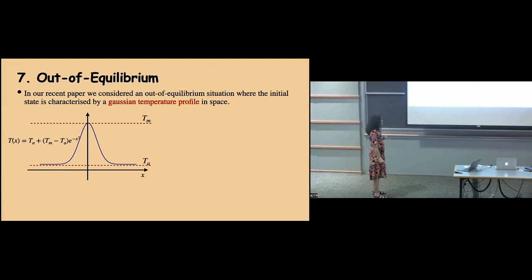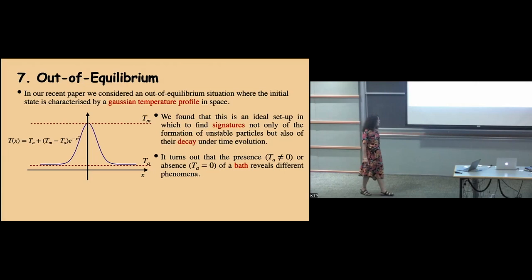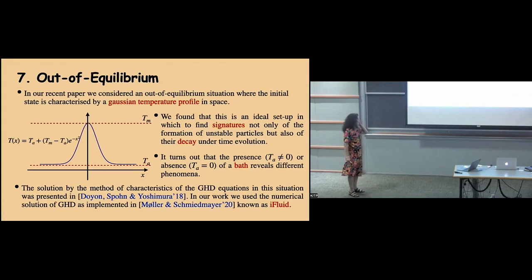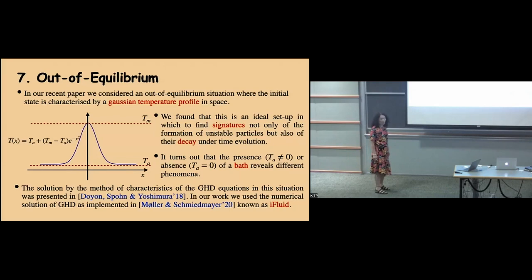When you do that, the unstable particles suddenly don't have enough energy to exist and start to decay. We found that you can see signatures of this decay when you look at the spectral density and related functions. To solve the GHD dynamical equations, one can use the method of characteristics numerically. Instead of implementing that ourselves, we employed an existing numerical algorithm called iFluid — an implementation of GHD done by Frederik Møller and Jörg Schmiedmayer — which is available for everyone to use.